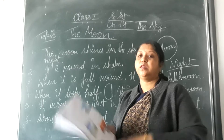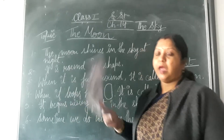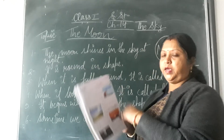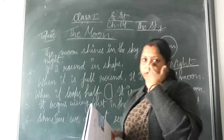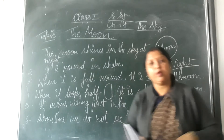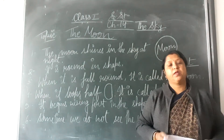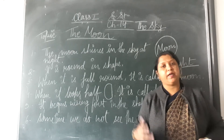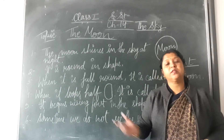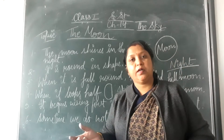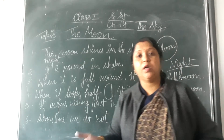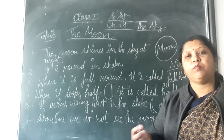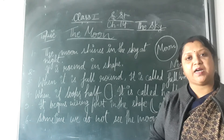Our topic will be The Moon. Aaj ab The Moon ke baare mein padhenge. First we will recall the chapter — The Sky. I told you the sky is above us. It looks blue in color. We can see sun, moon, stars.